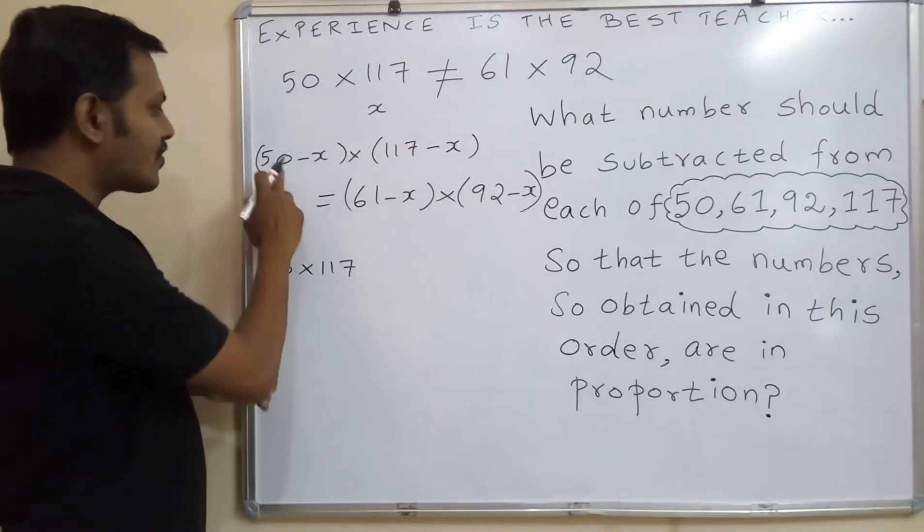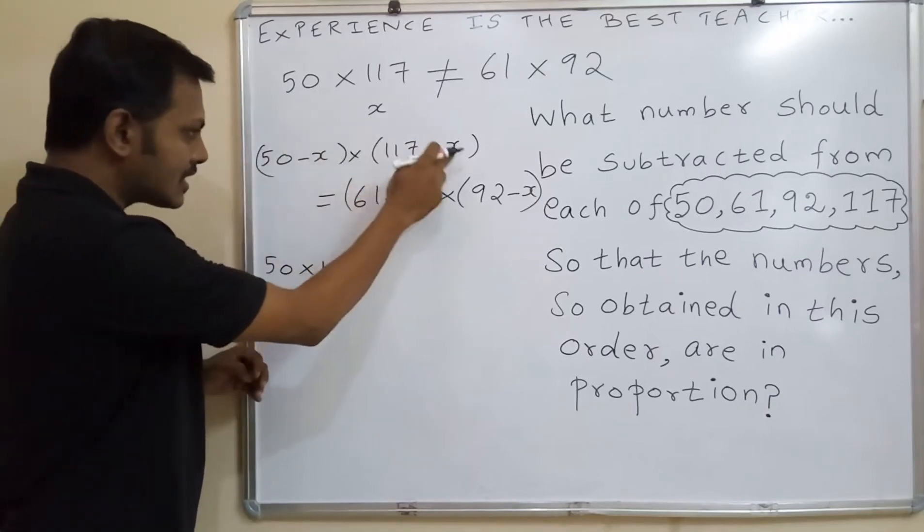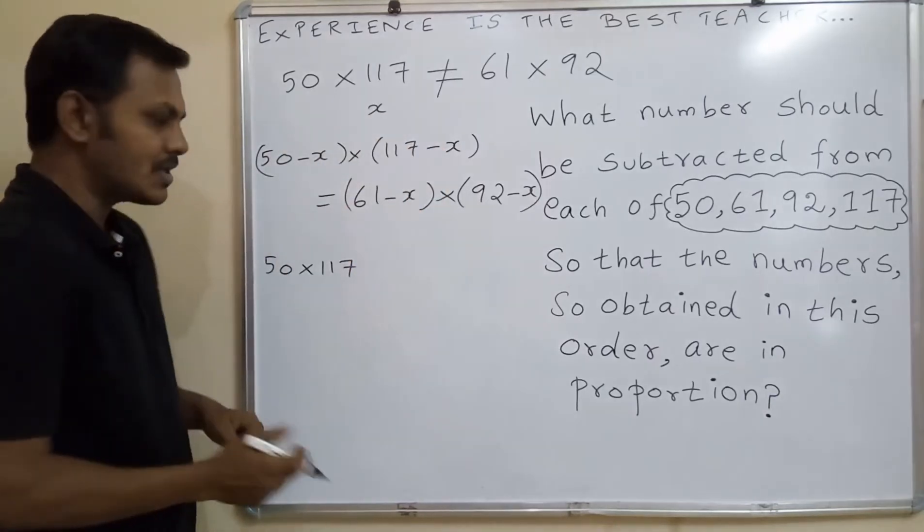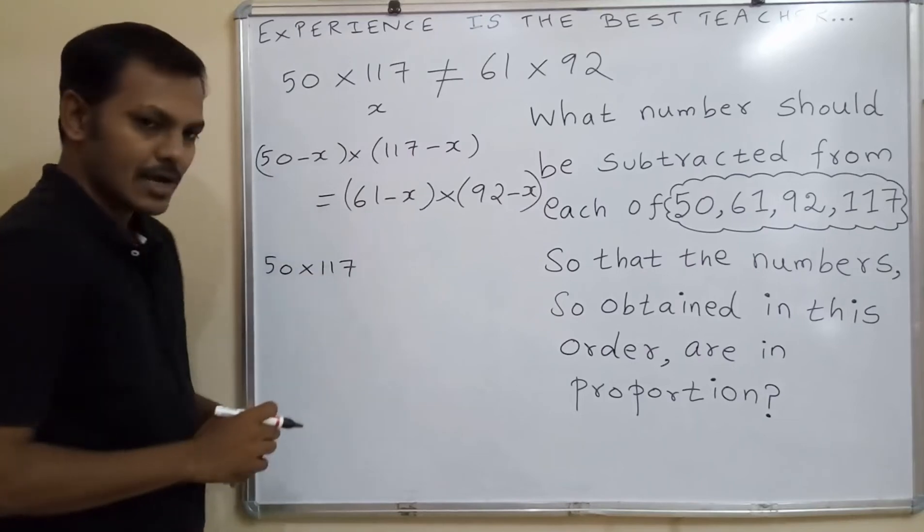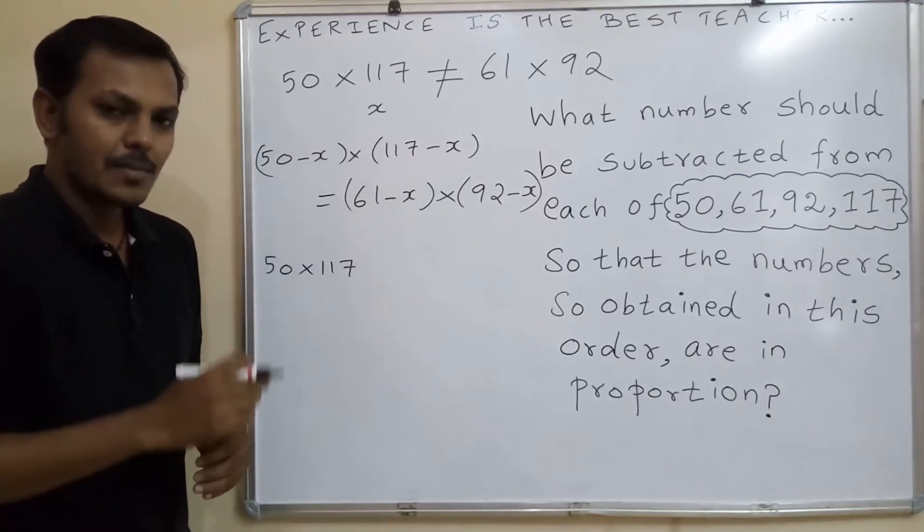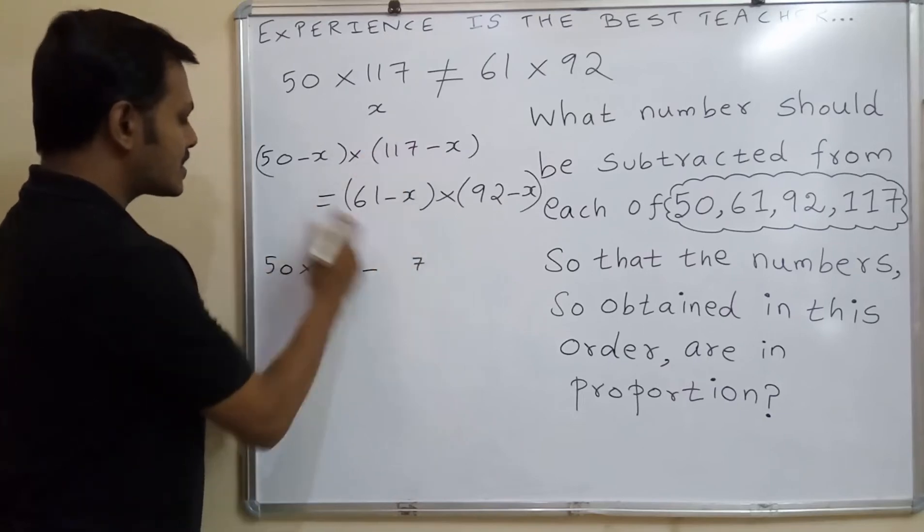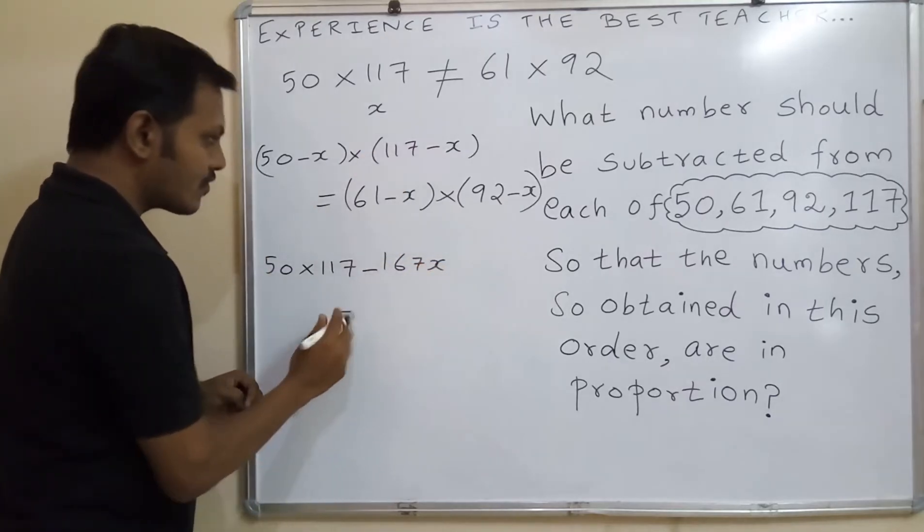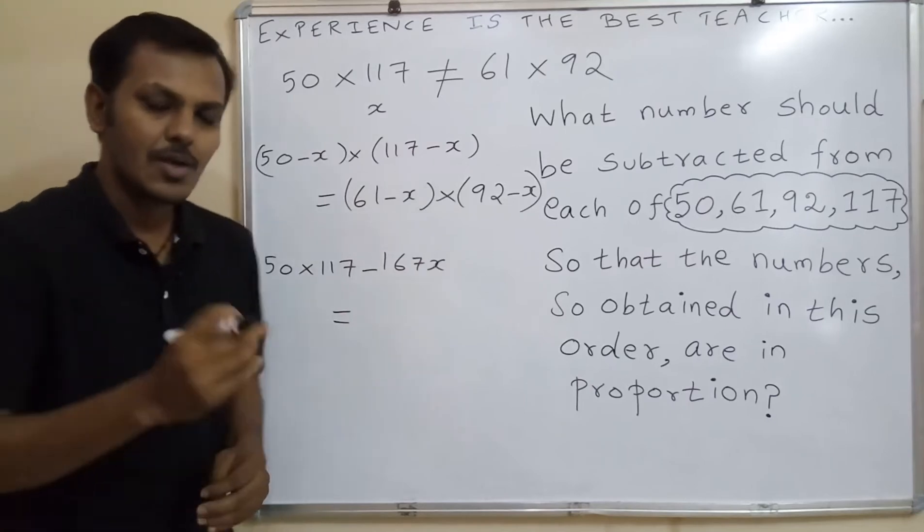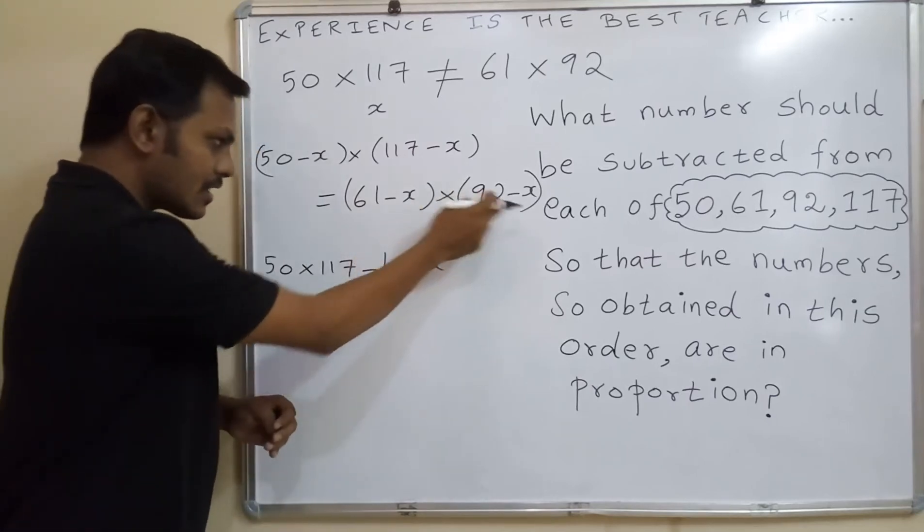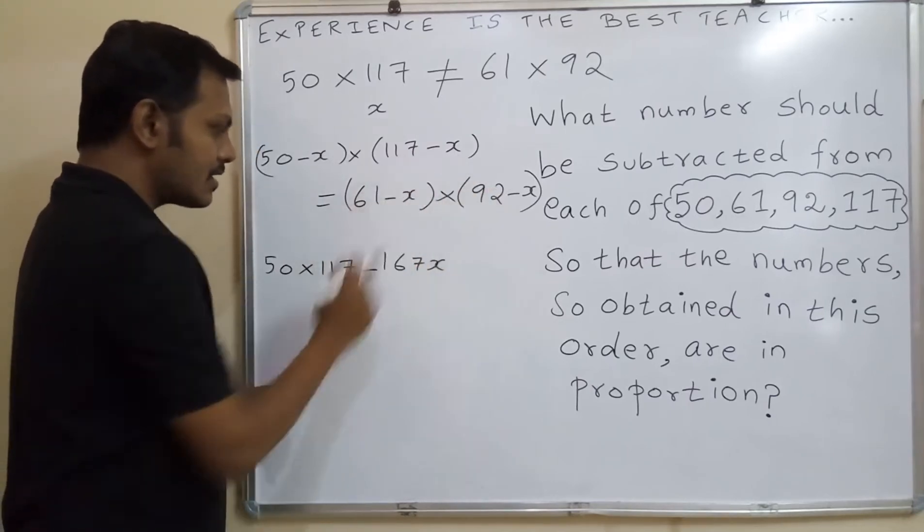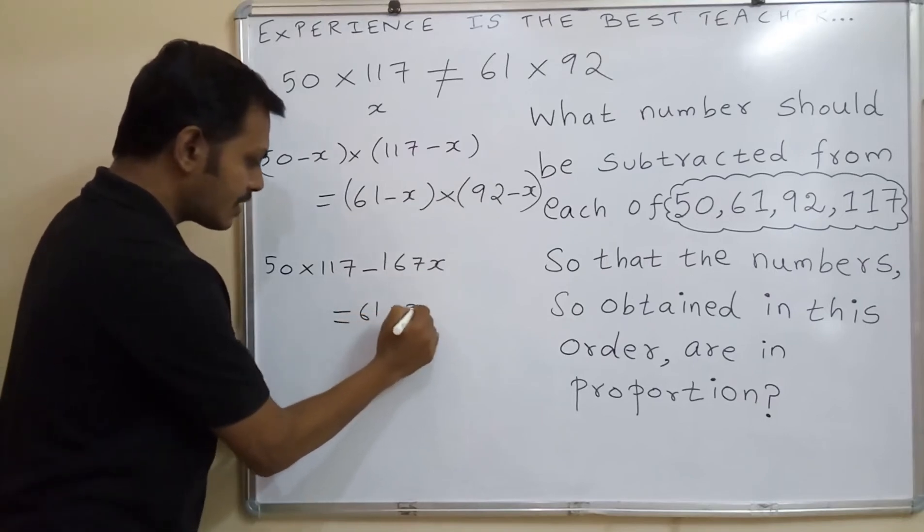Just keep in mind. After that when you are multiplying this, 50 into x you will get minus 50x, minus x into 117, by adding these two you will get minus 167x. Into another binomial, 61 into 92, 61 into 92.